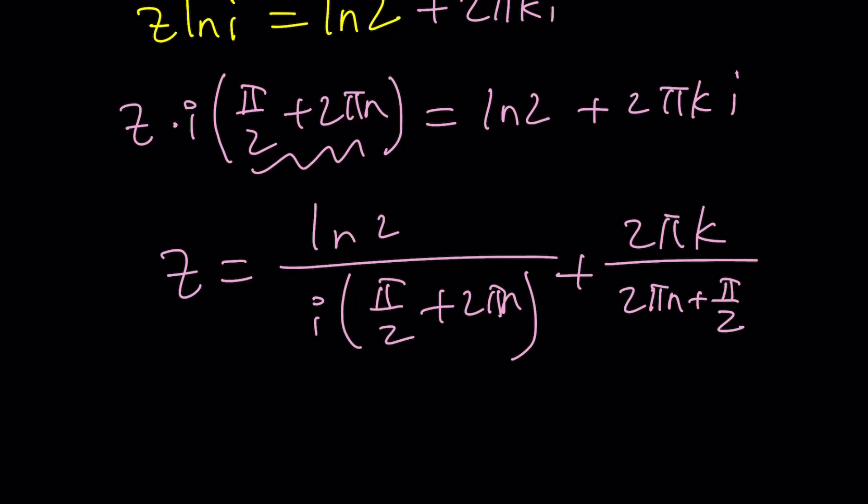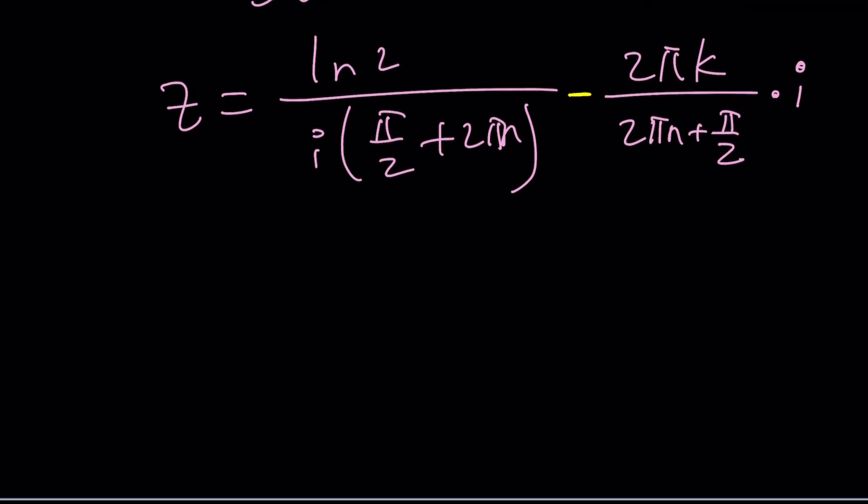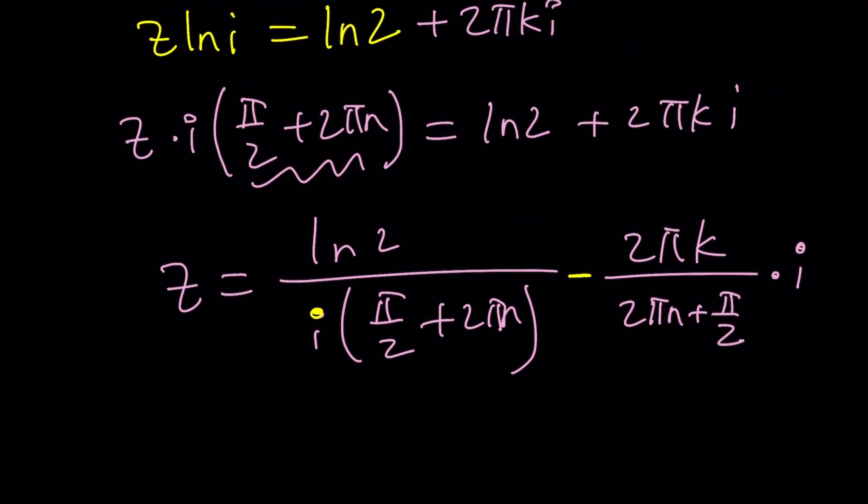But there's an i at the bottom. So, I can multiply by negative i and put a minus sign here. And it's all going to be good. So, looks like that should be the solution. But we have an i at the bottom here. Uh-oh. That should not be the case.